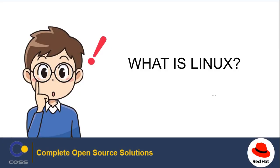Before starting, let's see what Linux is first. Linux is an operating system or a kernel. It is distributed under an open source license. Linux is a free computer operating system similar to the Unix operating system in terms of concepts, features and functionality. It is therefore referred to as a Unix-like operating system.